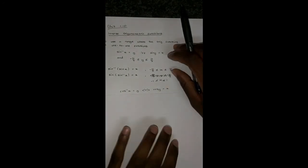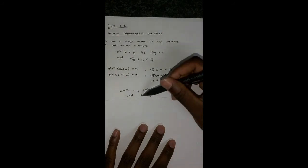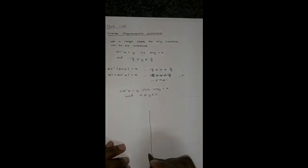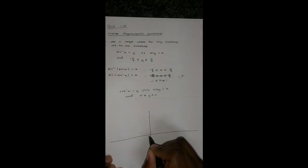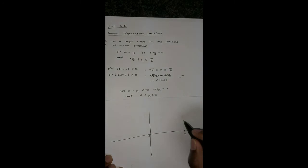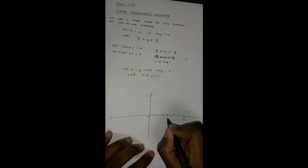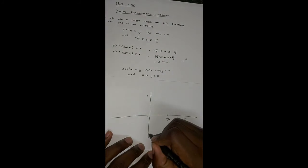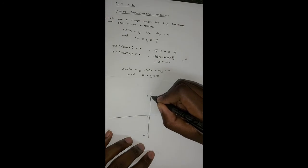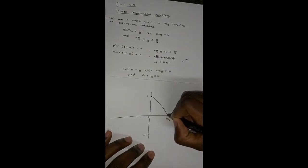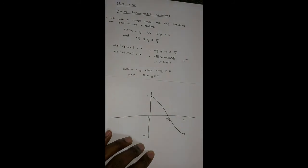Moving on, arccos(x) equals y if and only if cos(y) equals x, and we use the range 0 to pi. On the graph, we have 0 and pi on the x-axis, with 1 and negative 1 on the y-axis, and pi over 2 as a midpoint. The cosine graph starts at one end and comes down across that range.